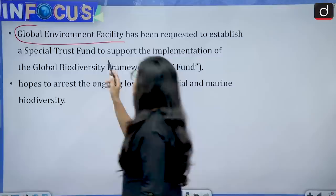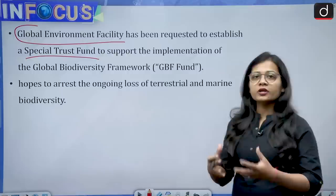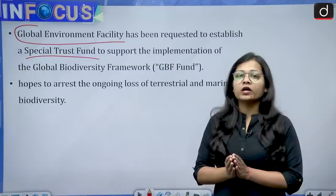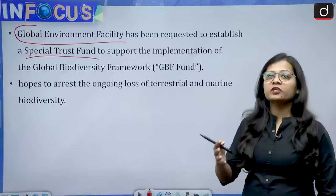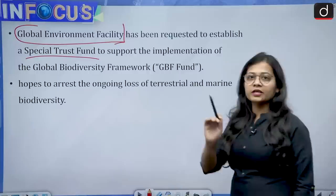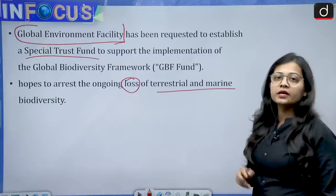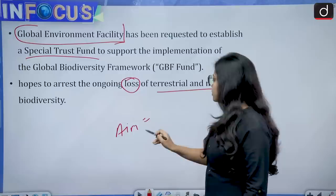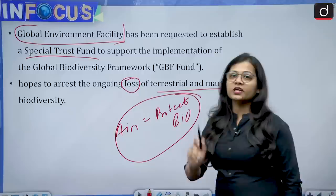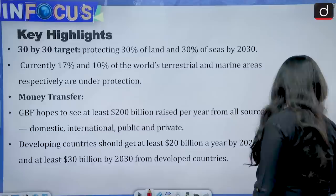The Global Environment Facility has been requested to establish a special trust fund to support the implementation of the Global Biodiversity Framework. Whenever we talk about a framework, we need capital to run it, and the Global Environment Facility is responsible for arranging that capital — an important Prelims point. The framework will also aim to arrest the ongoing loss of terrestrial and marine biodiversity, with the key focus on protection, preservation, and conservation.